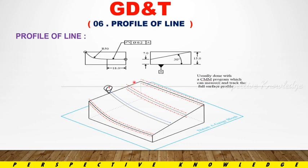That is the CMM stylus probe use, tracing a line — that is the profile of line. In the profile of line, there is a half semicircle symbol. That is a value of 0.2. If you have any datum, you can use the datum as a reference. If you use the datum as a reference, you can use the profile of line.